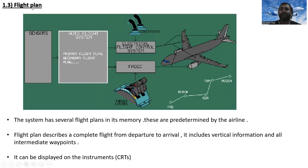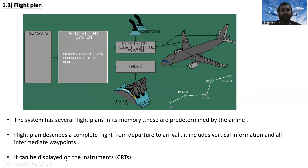Next is the flight plan. The system has several flight plans in its memory, which are predetermined by the airline. The flight plan describes a complete flight from departure to arrival — it includes vertical information and all intermediate waypoints. These waypoints can be displayed on the instruments, meaning the cathode ray tube displays. The auto flight system holds primary and secondary flight plans, already predetermined by the airline.